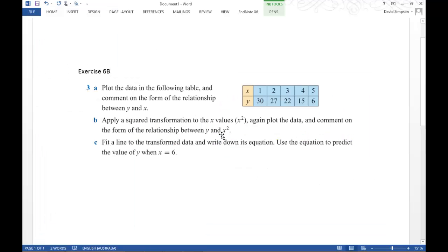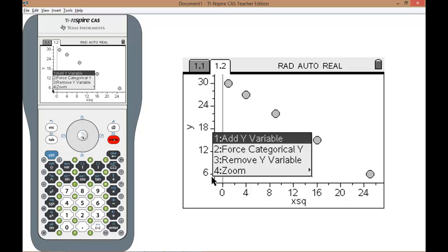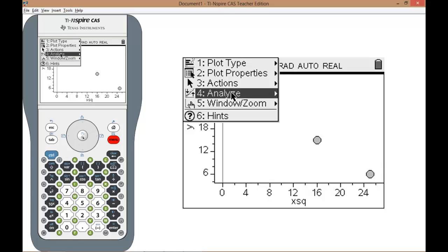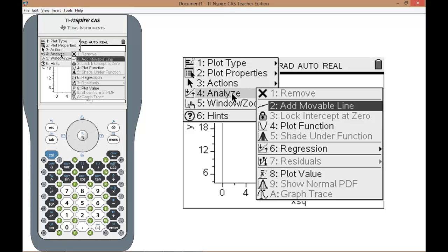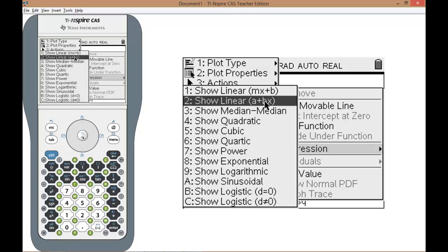The last part of the question says fit a line to the transformed data and write down its equation. Use the equation to predict the value of y when x equals 6. So to do this you need to select menu, analyse, regression and show linear.